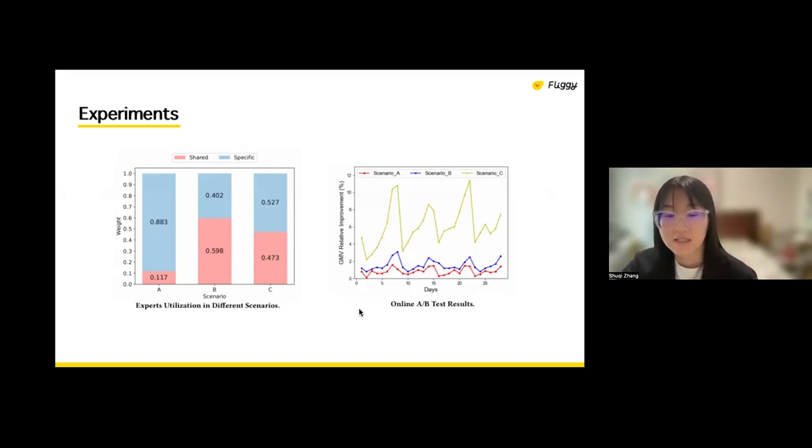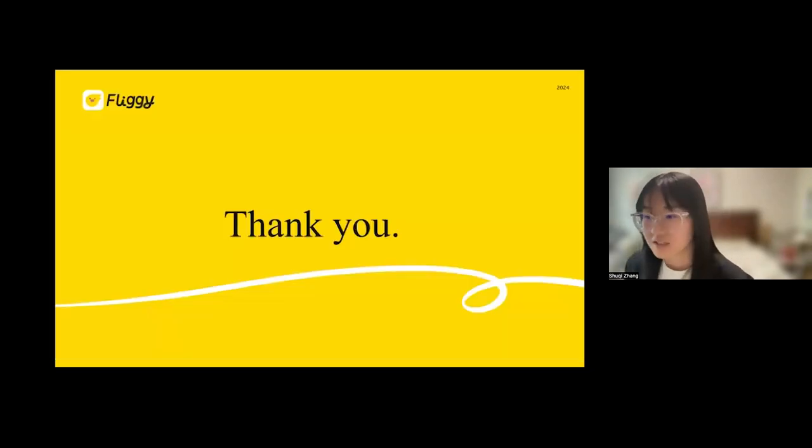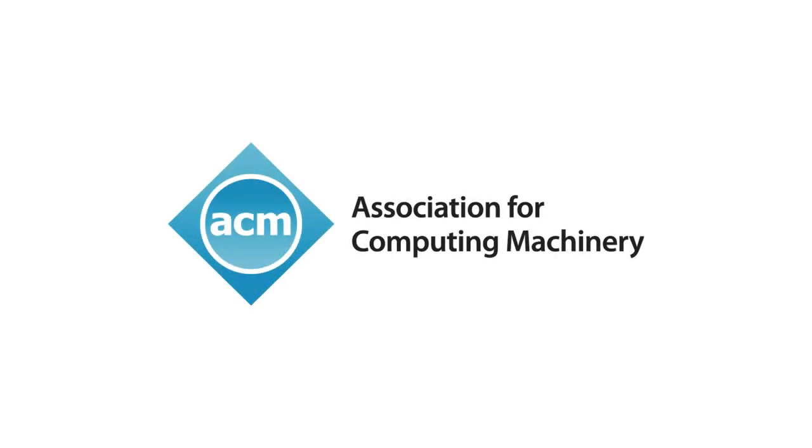And finally, as the diagram shows here, a four-week online A-B test is executed. And we can tell that the GMV got some improvement under all the three different scenarios. And here's some conclusions. And that's all the presentation. And thank you very much for your time. And do you have any questions? Thank you.